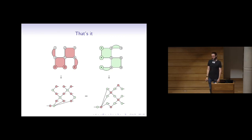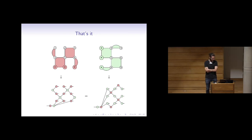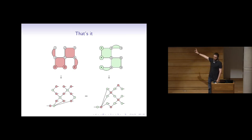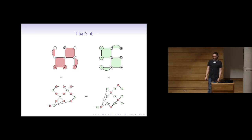Q: Is there a correspondence between ZX diagrams and the color code? A: Yes, you can play the exact same game with color codes because they are CSS codes. You have the graph, you color it, take the X or Z representation — both look like the graph. You can also do lattice surgery along edges. It would be a nice small project to work out the details; I expect it would go pretty much the same way as for the surface code. Thank you.